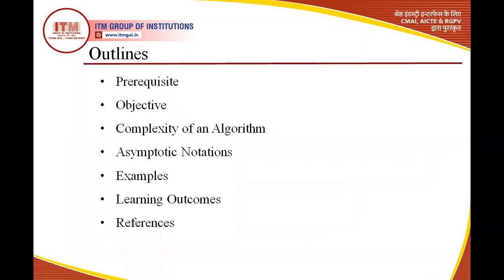The outline of this lecture includes: prerequisite, objective, complexity of an algorithm — meaning we have to find the complexity of an algorithm and then come to the asymptotic notation. We will also work on some examples regarding asymptotic notation, learning outcomes, and references for this lecture.